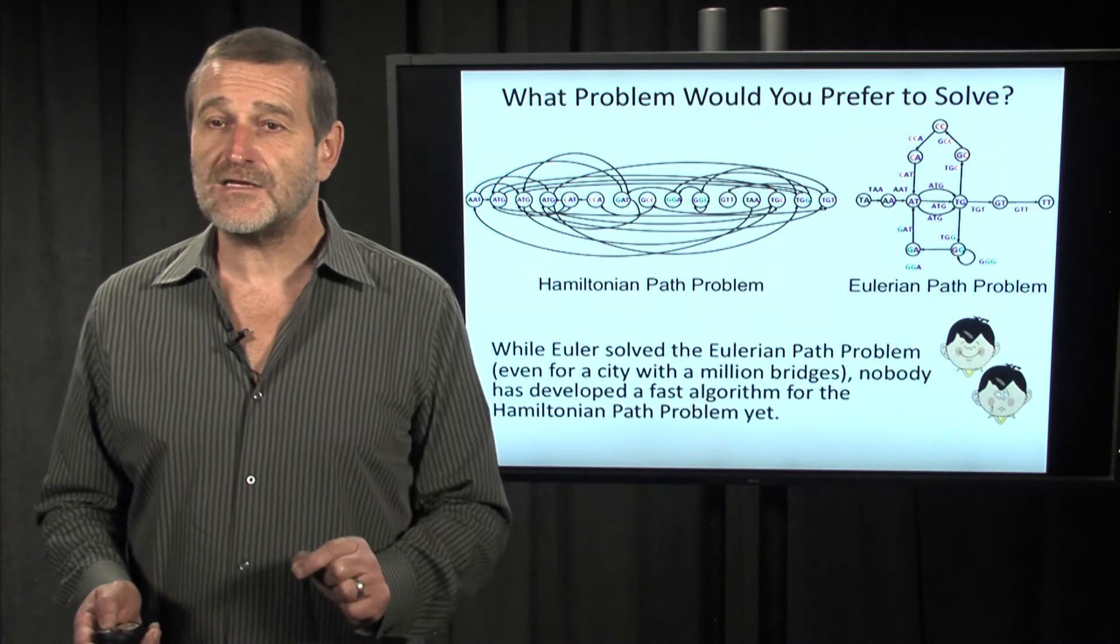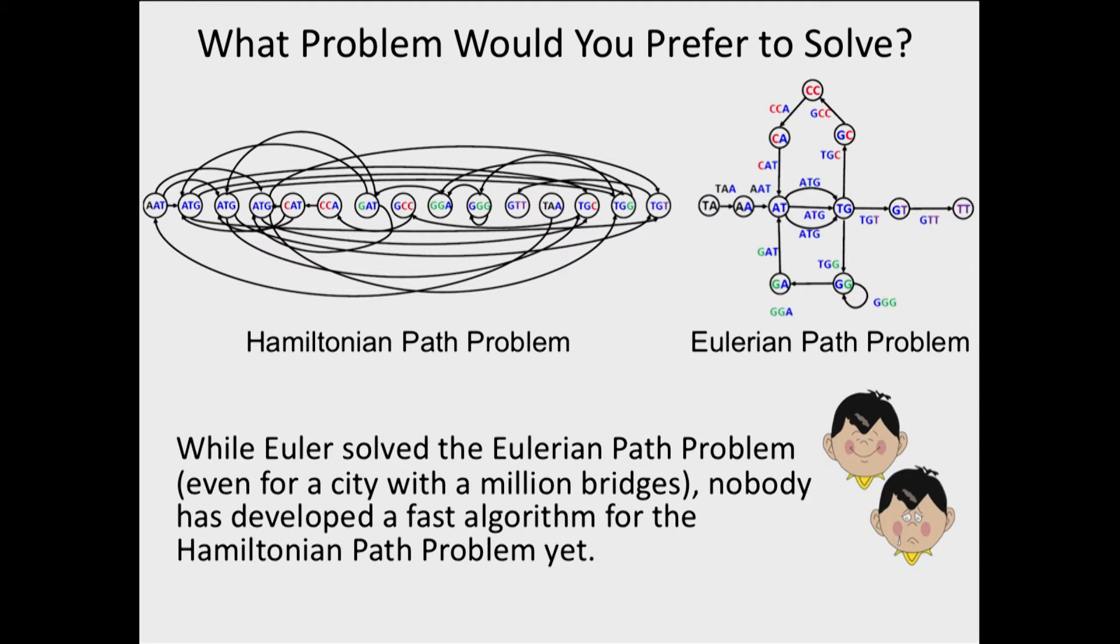And it turned out that the different algorithmic fate of these problems is related to the fact that Euler actually found an algorithm for efficiently solving the Eulerian path problem. But a generation of computer scientists failed to find an efficient algorithm for the Hamiltonian path problem.